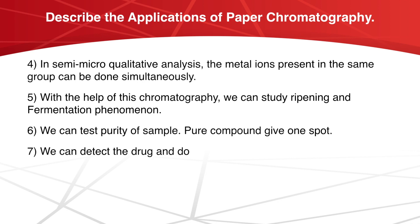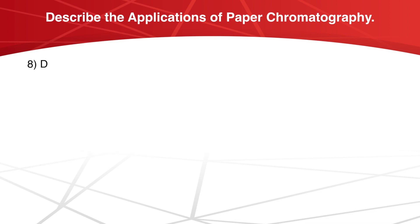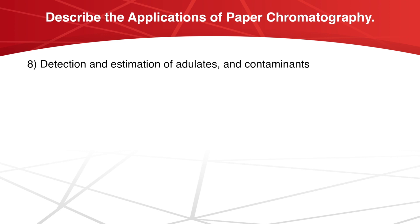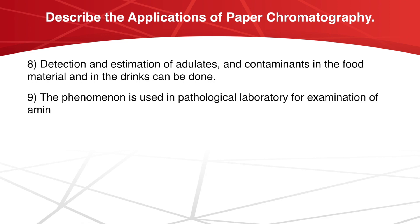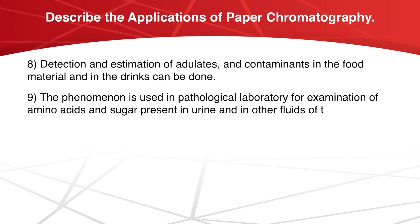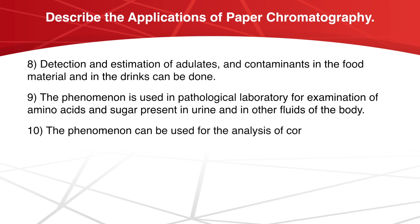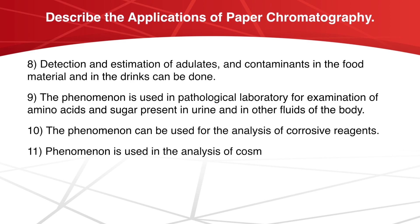We can detect the drugs and dopes present in the animal and human body. Detection and estimation of adulterants and contaminants in food material and drinks can be done. The phenomenon is used in pathological laboratories for examination of amino acids and sugars present in urine and other body fluids. It can also be used for the analysis of corrosive reagents and cosmetics.